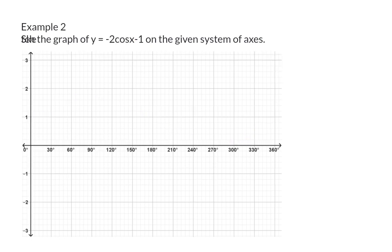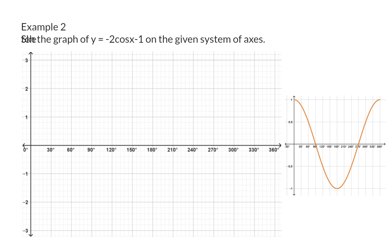Example 2. Sketch the graph of y is equal to minus 2 cos x minus 1 on the given system of axes. And again, we're going to start off with the mother graph, in this case, that of cos. And now we have two transformations to take into account.